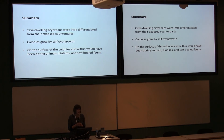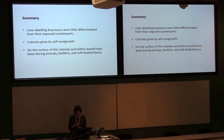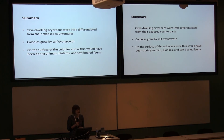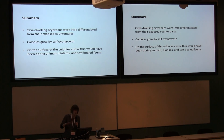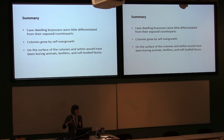In summary, these cave-dwelling bryozoans showed little difference from their exposed counterparts — growing down into the cave didn't seem to matter; they grew just as fast and just as big. The colonies generally grew by self-overgrowth, which reveals many additional features. What appears on hand specimens as just a bryozoan on a bare rock surface is actually a colony bored by several different types of animals, with biofilms and soft-bodied fauna living on and around the bryozoans. Just by looking at these small specimens you get a picture of the paleoecology of this area.